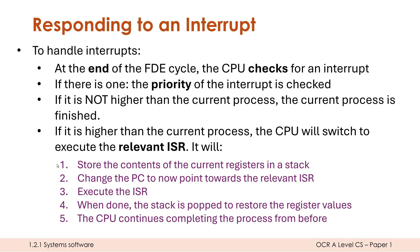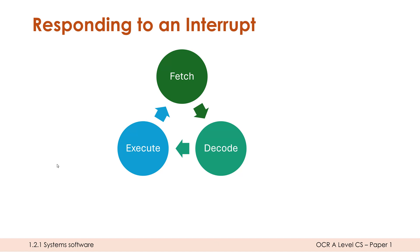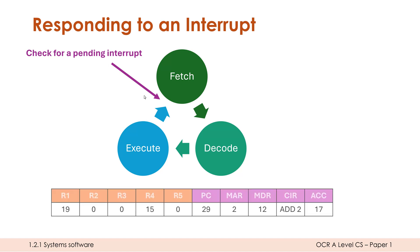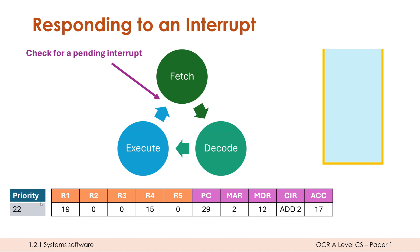To help visualize this, let's walk through it. We've got our FDE cycle, done billions of times per second. We check for a pending interrupt at the end of the cycle — not midway through. Let's imagine this is the current state of my registers, with some made-up values — we're midway through a process with a priority of 22. If 100 is most important and 0 is least, this isn't the highest priority but we're currently working on it. We also have our stack, which is just an area of memory the OS is reserving for this purpose.